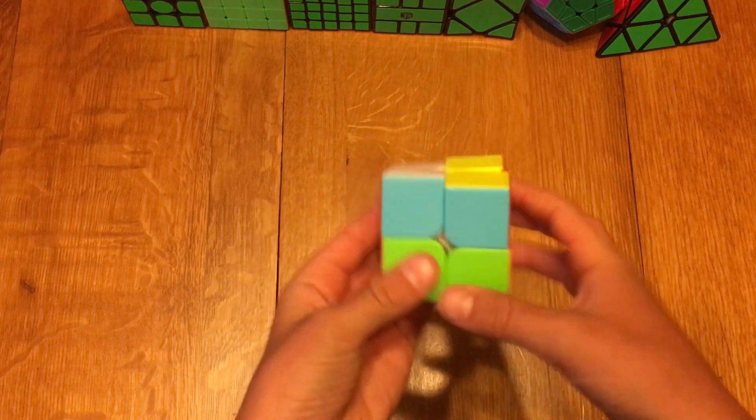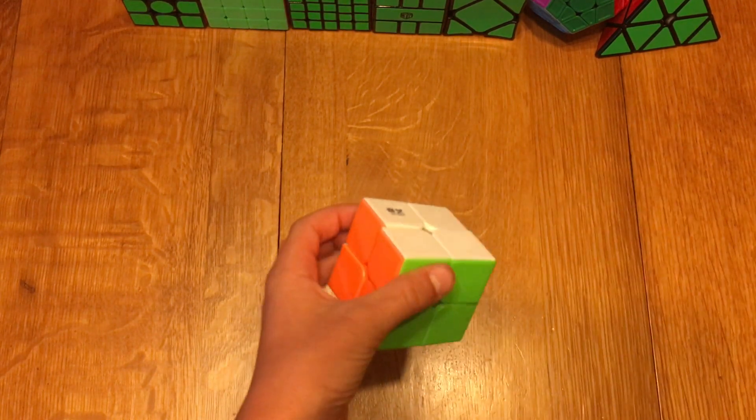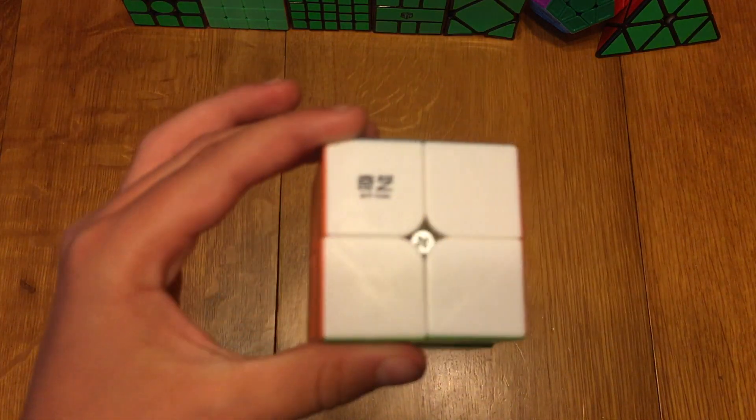So for 2x2, I'm hoping to get a sub-6 average and a sub-5 single and hopefully make second round. I'm using the QiYi QiDi S.